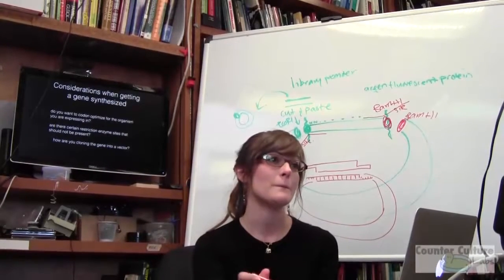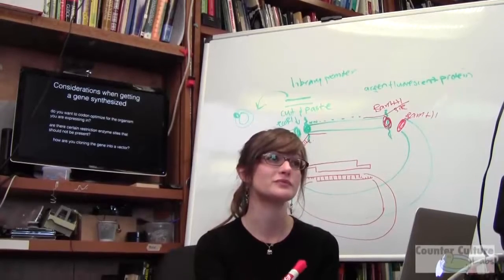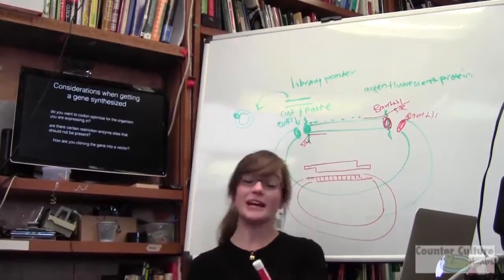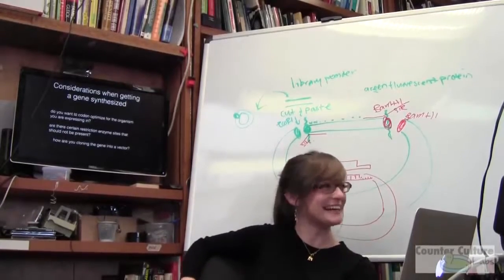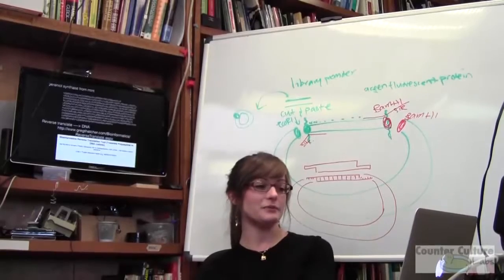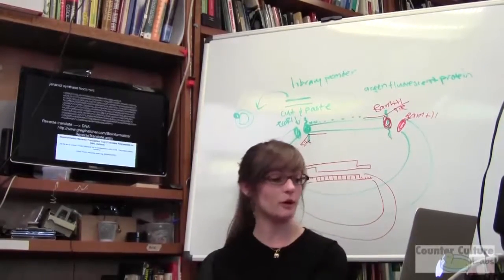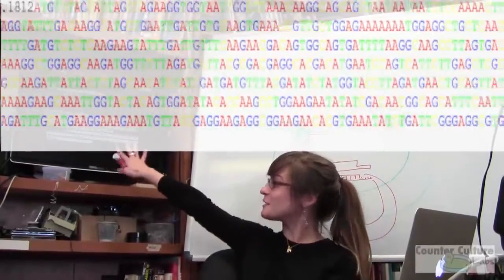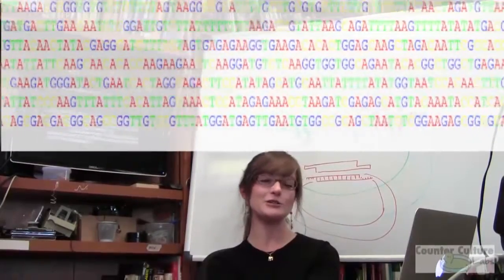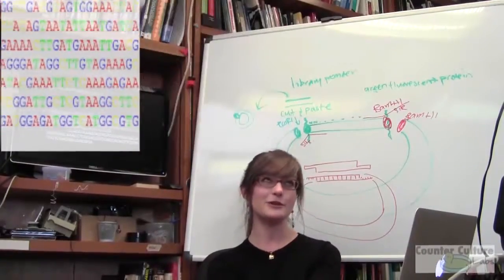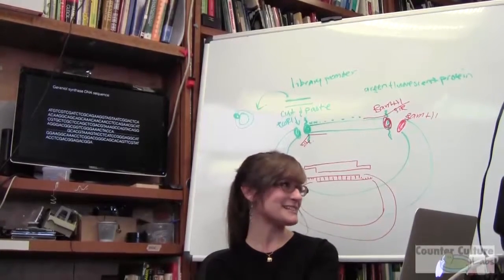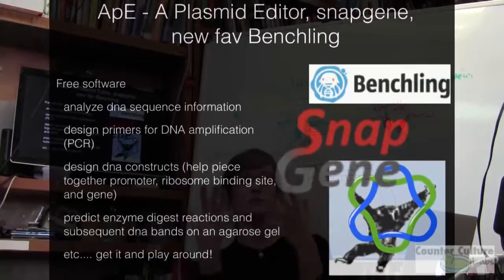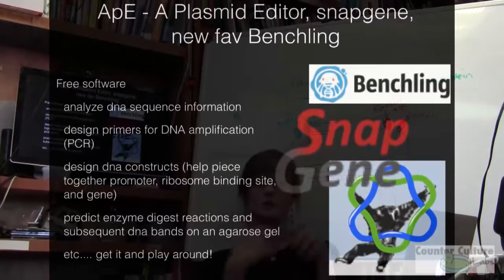Definitely if you're going to take something out of a plant and put it in bacteria, I would try to optimize it. You have your gene sequence — when you put it into this reverse translate tool, you get out your DNA sequence, which is much longer than shown. You can take your gene sequence and play around with it. My favorite tool is APE — a plasmid editor — it's free software you can download.